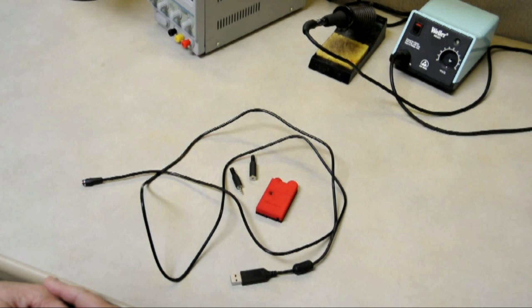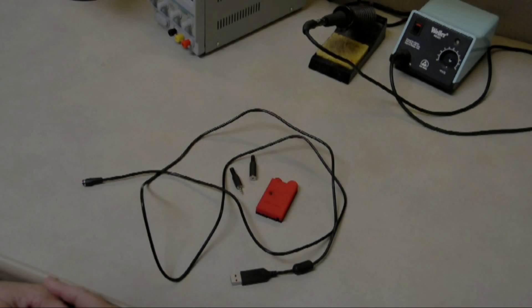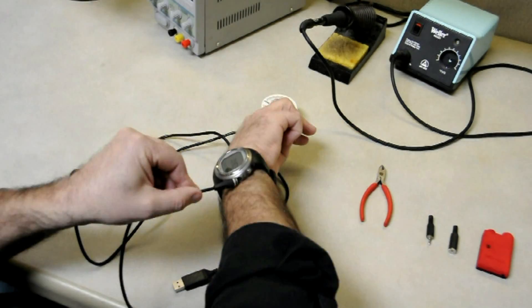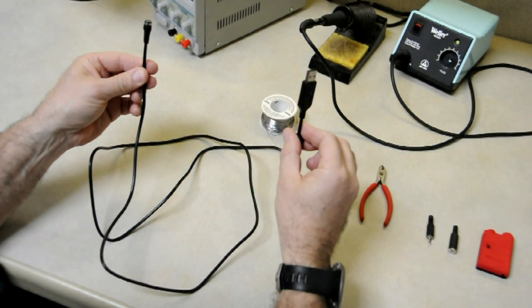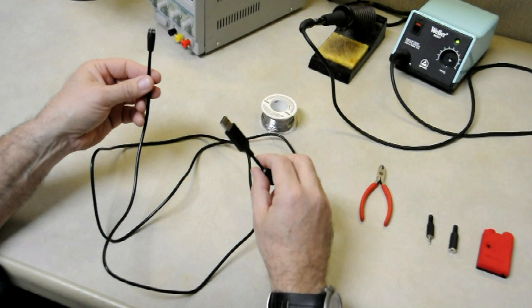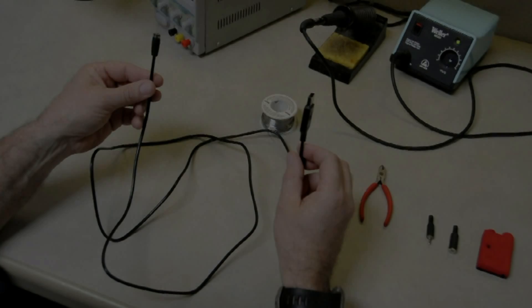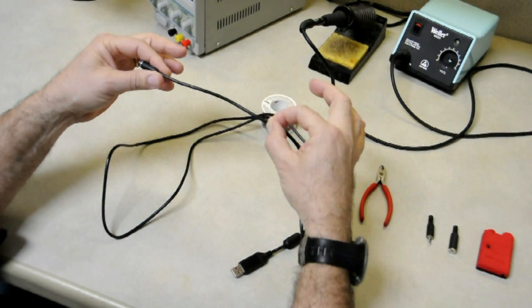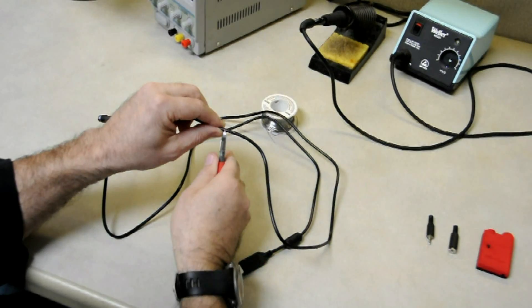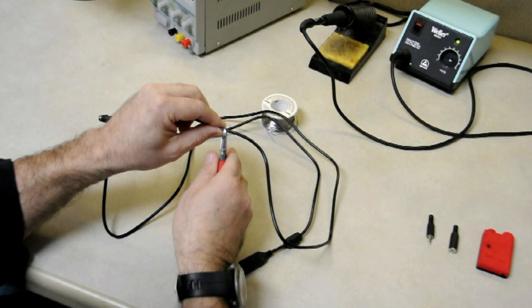Let's start with the download cable for the Suunto D family. First make sure that the USB cable is disconnected from the dive computer and from your PC. Then cut it at a length of about 8 inches or 20 centimeters from the circular connector that goes inside the dive computer.